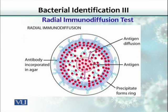Soluble antigens are like toxins released by microorganisms — the very typical example of a soluble antigen is toxins. Against that toxin, if we have produced antibodies, we place that antibody in the medium, embedded in this agar. The antigen is placed in a well in the center of the agar gel plate and would diffuse out radially in all directions — that is why it is called a radial immunodiffusion test.